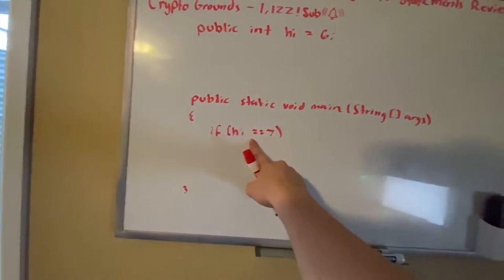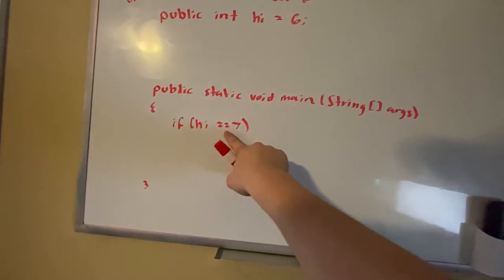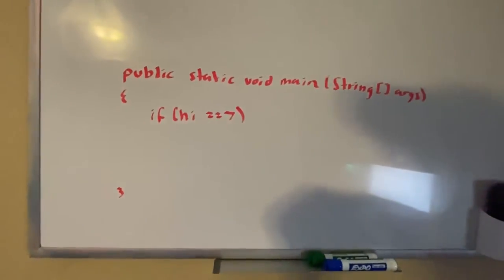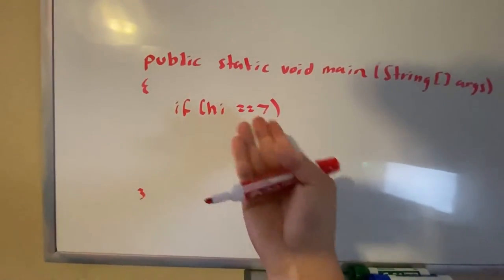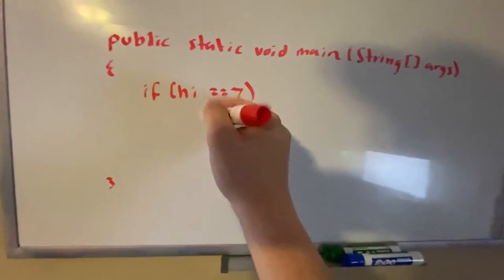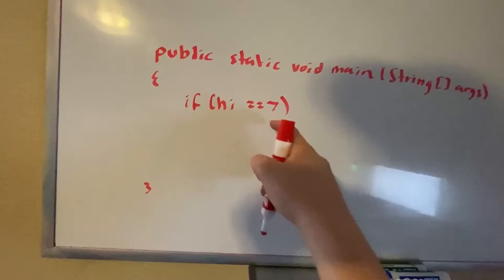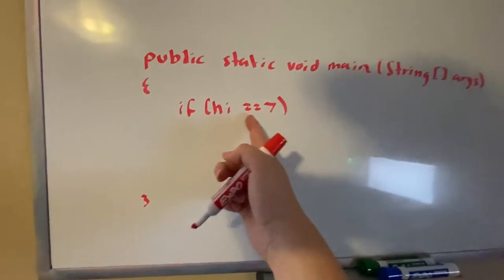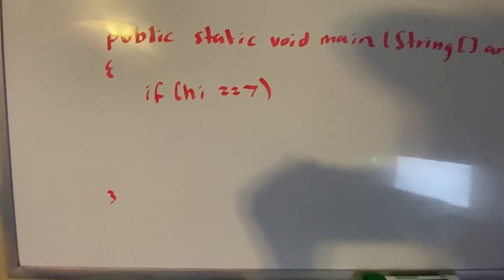We're just going to do if hi is equal to 7. Make sure if you haven't seen my operators video, you check it out because you'll learn what this means. This just checks if hi is equal to 7. Now you can't just do one equal sign because that sets hi to 7. This is checking if it's equal.